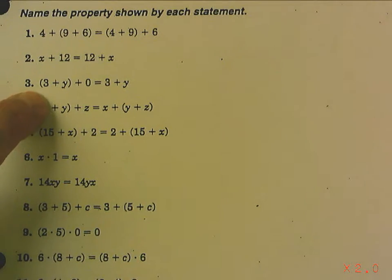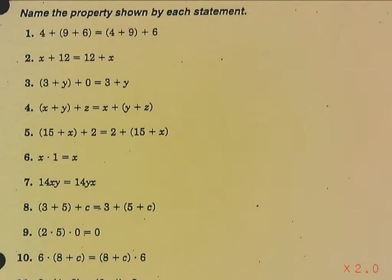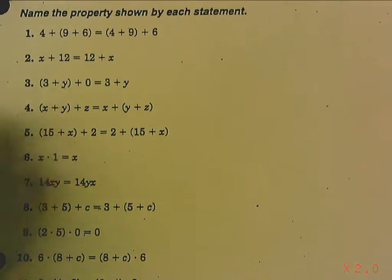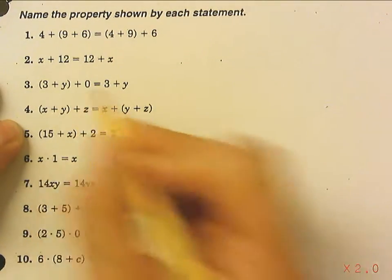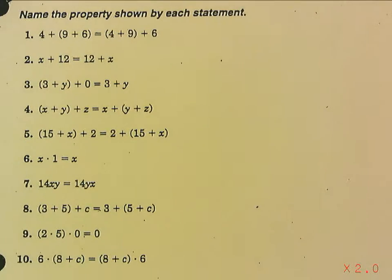Now, number 3, we're adding 0 to (3+y). Well, does adding 0 change the identity of 3 plus y? No, it doesn't. So whenever we add 0, that's the identity property of addition. It does not change its value.